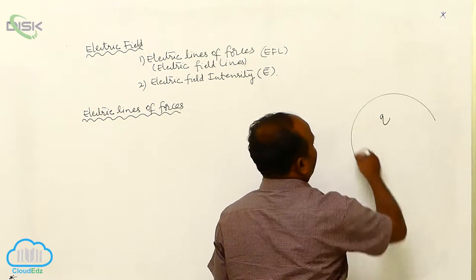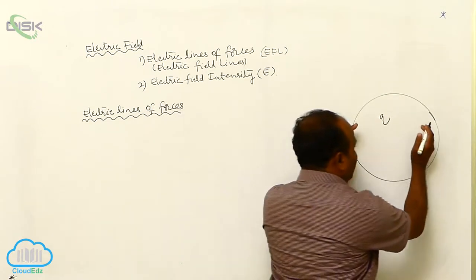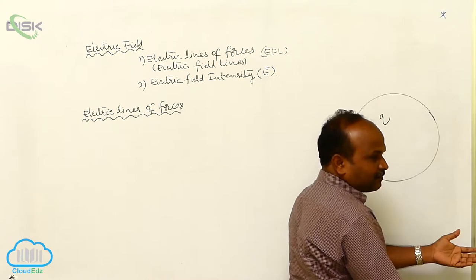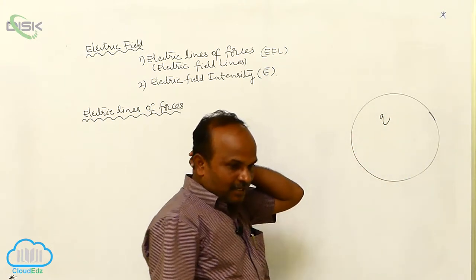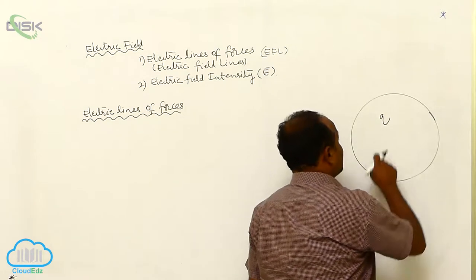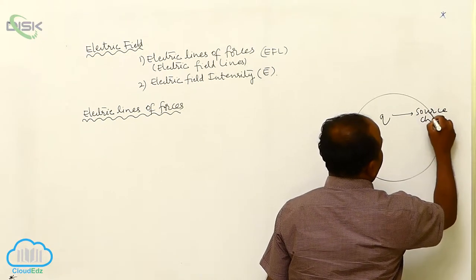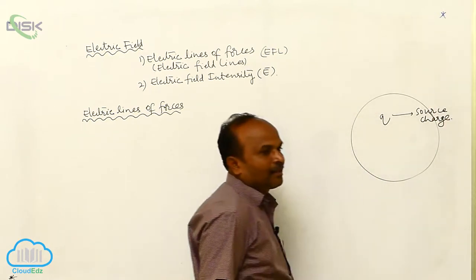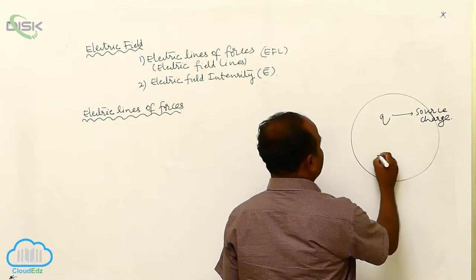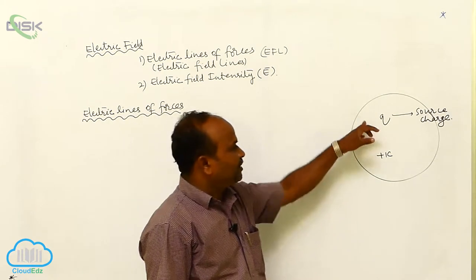Let us consider a charge. The modified space around the charge — the region where the electric properties of space are modified — is called the electric field. This field is produced due to a particular charge, which is called the source charge. In this electric field, let us consider a unit positive charge placed within it.